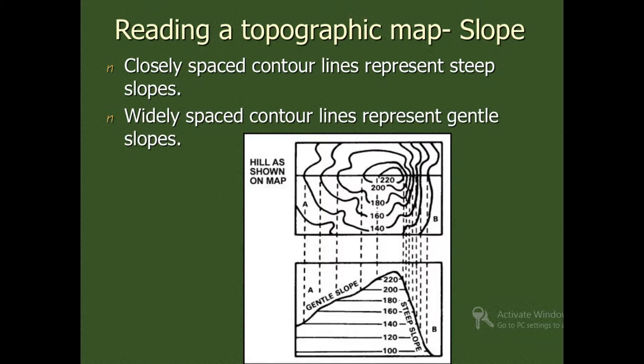If the contour lines are widely distributed, then you will find that the place is more or less a plain area. But if there are closely spaced contour lines, then you will find that either it will be elevation or it will be a depression place.